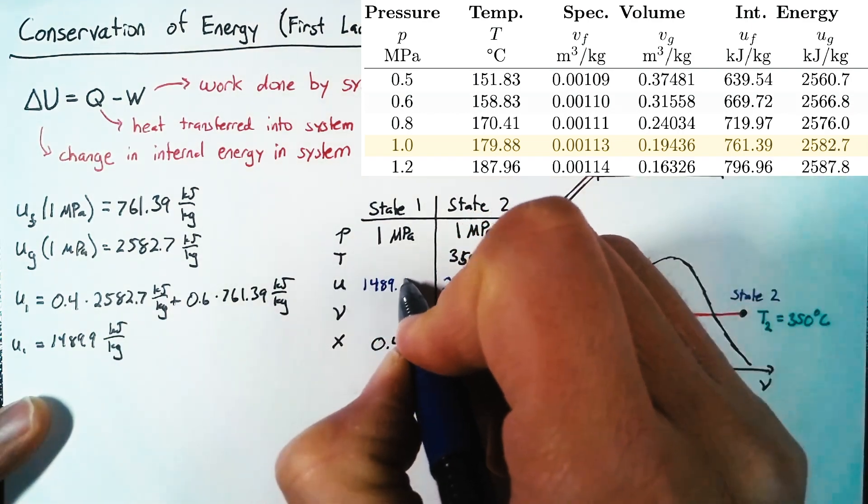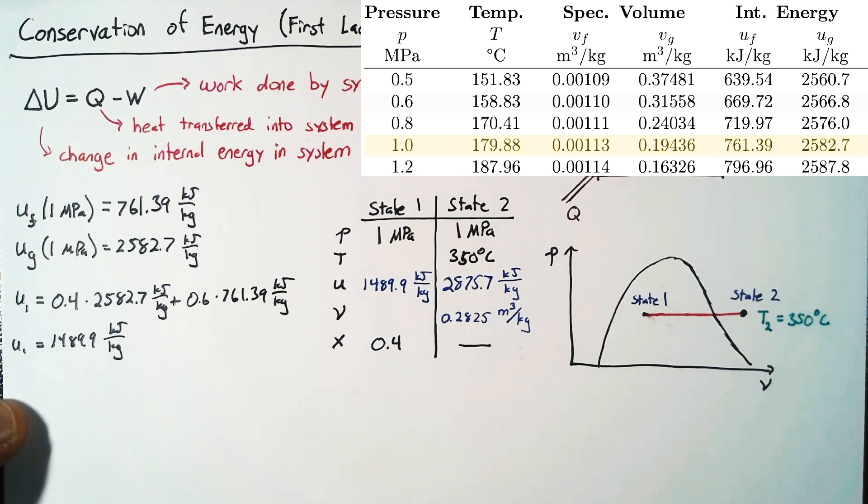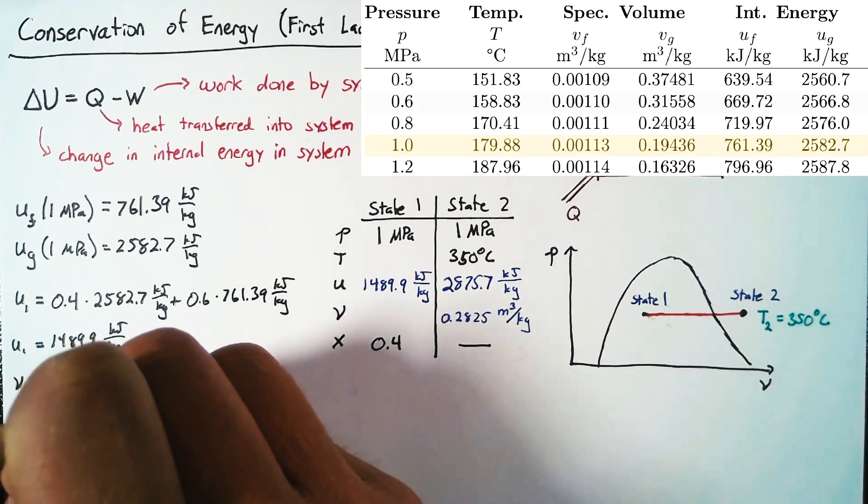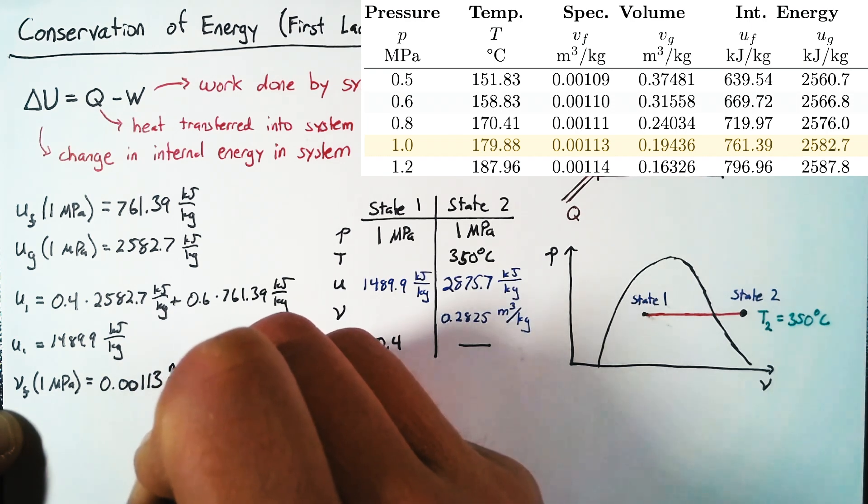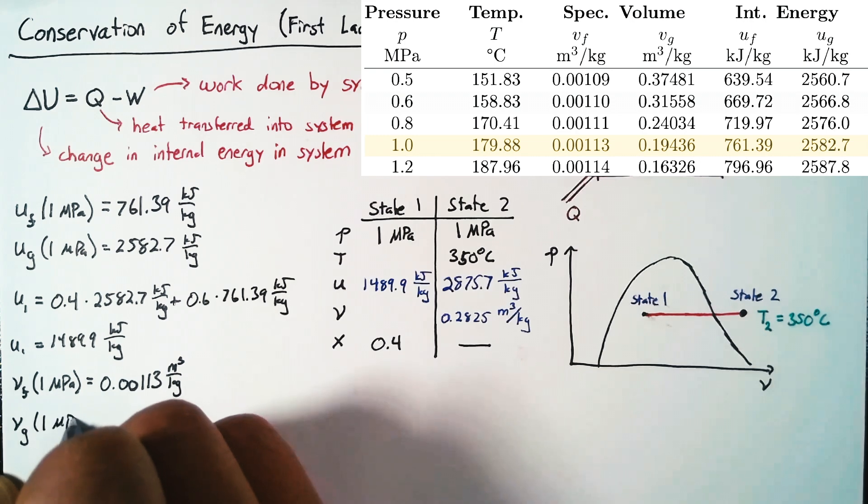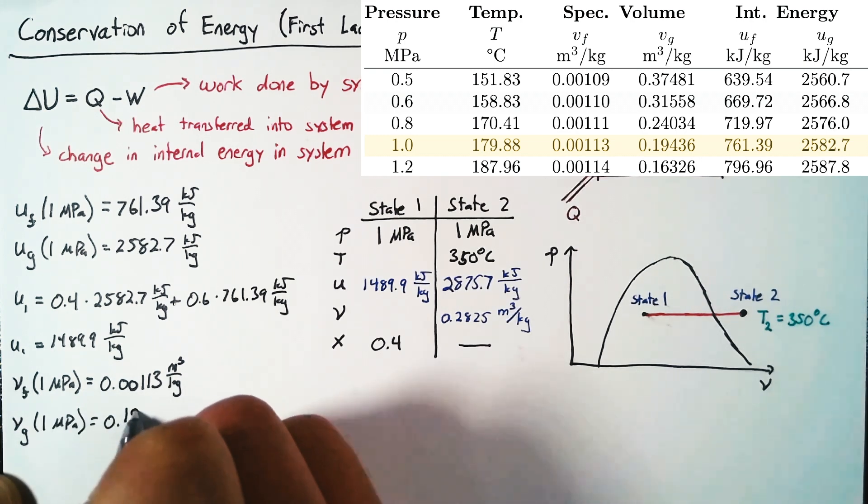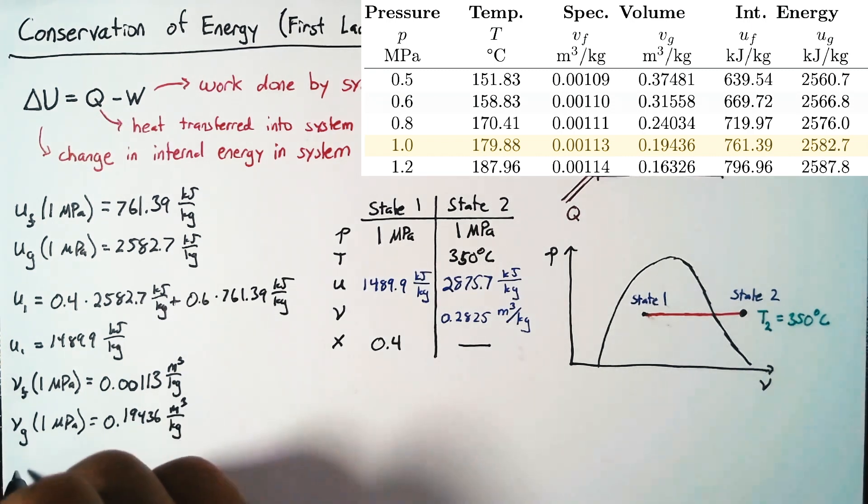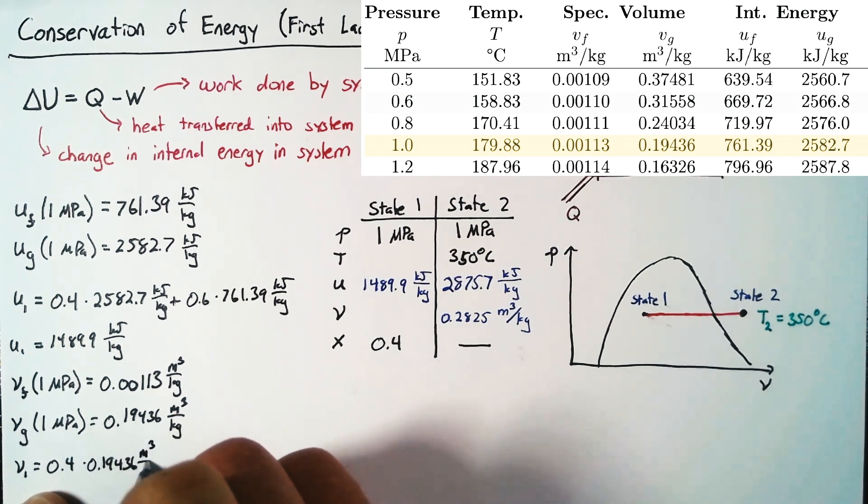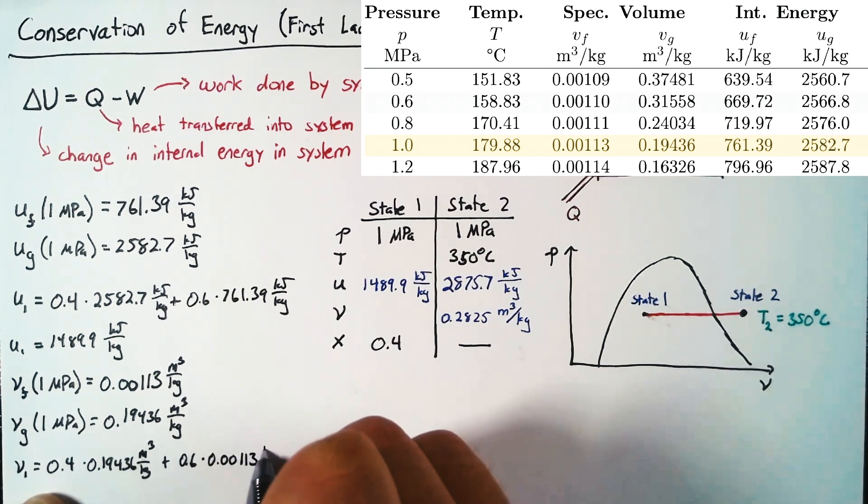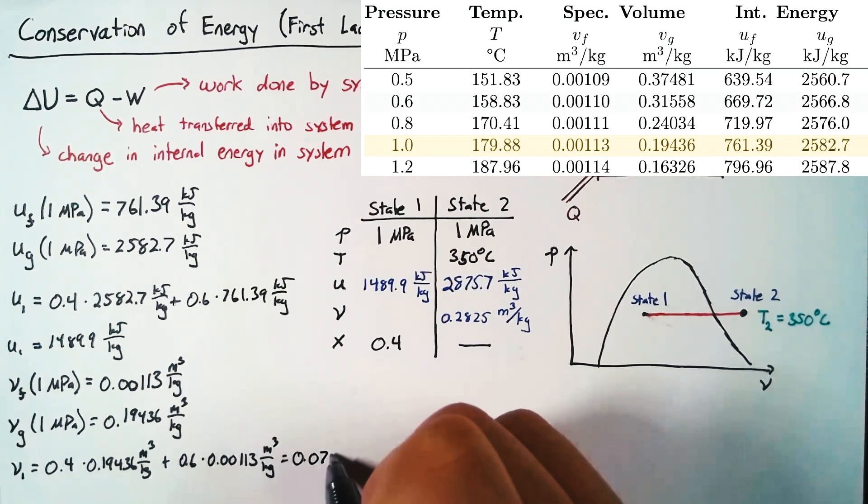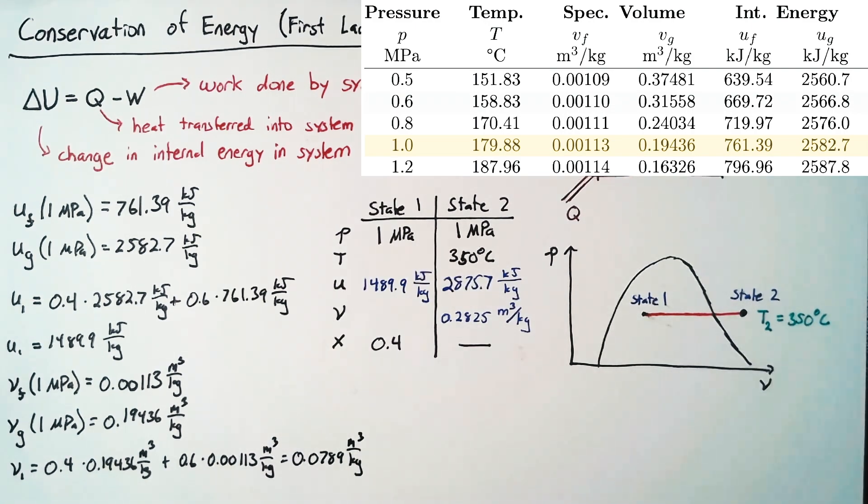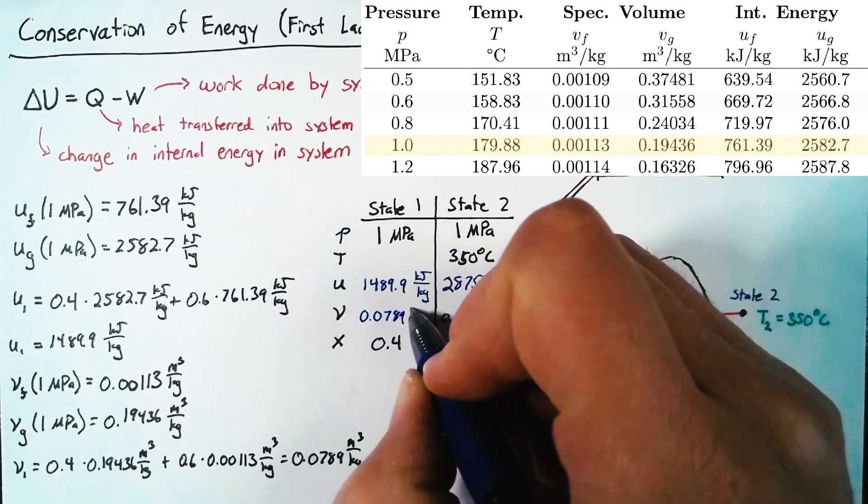And now we can do the exact same thing for our specific volume. So for water at 1 megapascal, that value is going to be 0.00113 meters cubed per kilogram. And then for steam, that value is 0.19436 meters cubed per kilogram. And so once again, we can find V1 by taking 0.4 times our steam value, plus 0.6, the remainder, times our water value. And this time that value comes out to be 0.0789 meters cubed per kilogram. And so we have our specific volume for state 1 from those calculations.